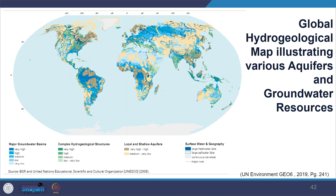Look at the dark blue colour indicating major groundwater basins in India — you can see dark blue colour over the Himalayan region, indicating that region is rich in water resources. Green colour shows complex hydrological structures, local and shallow aquifers shown in brown. Dark and light blue polygons with boundaries are surface water. Reflect on how they are distributed and what kind of conflicts and challenges that poses.